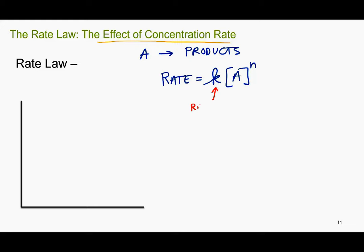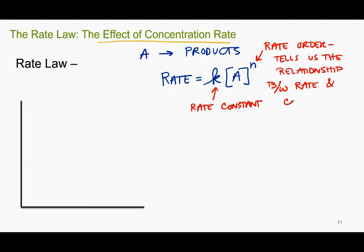That k is called my rate constant, we'll see what's all packed up in there in a little bit. And this n, this exponent on my concentration is called my rate order. The rate order is what tells us the relationship between rate and concentration.